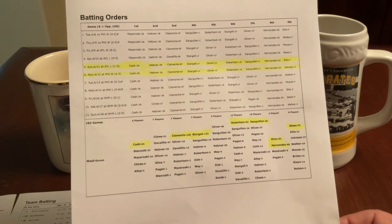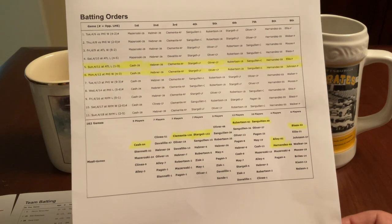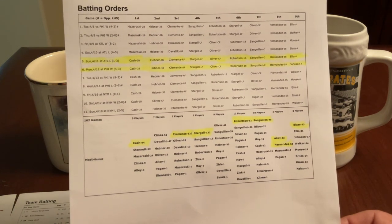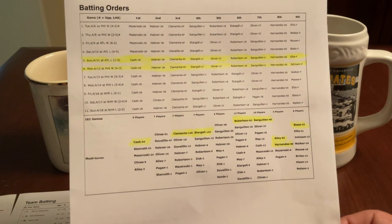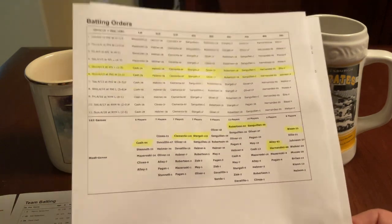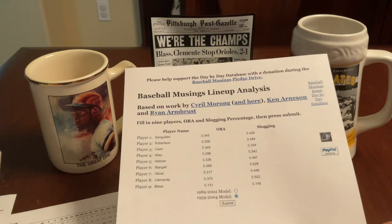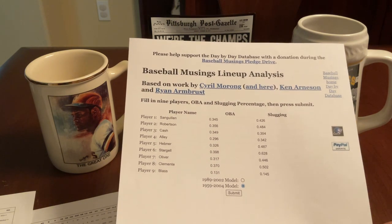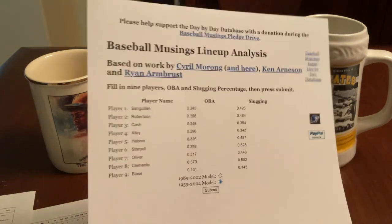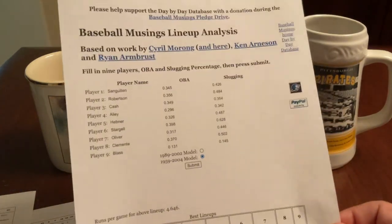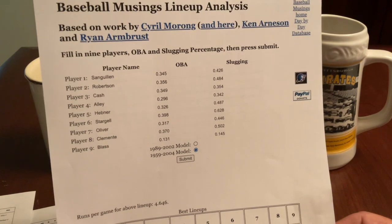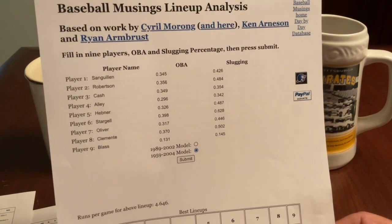Looking at the bottom of the page — for the whole season — you can see Dave Cash was by far the most common leadoff hitter. Clemente and Stargell were by far the most common third and fourth hitters. And then Robertson and Sanguillen, with Alley and Hernandez as the eighth hitters. So with that as background, I did a Google search and found a site called Baseball Musings, which has a free online lineup analysis tool. I took the data from Baseball Reference and typed in the typical starting lineup I just described.